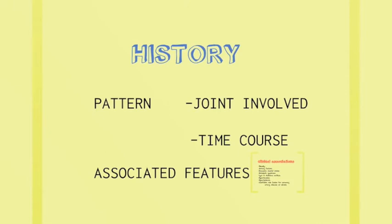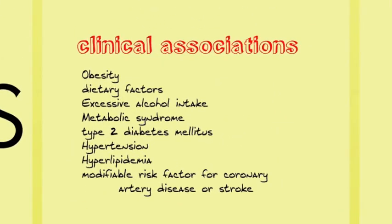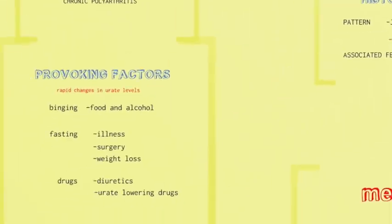The history will give you the pattern of joint involvement, the time course of joint involvement, and the associated features, which include obesity, excessive alcohol intake, metabolic syndrome, type 2 diabetes, hypertension, and hyperlipidemia — in fact the modifiable risk factors for coronary artery disease and stroke. Dietary factors need to be assessed to determine whether altering the diet may have a significant effect on uric acid levels.